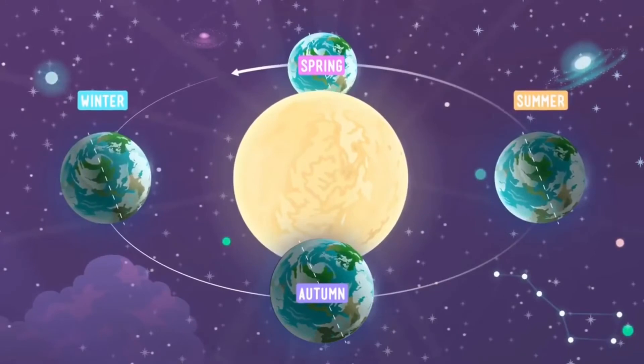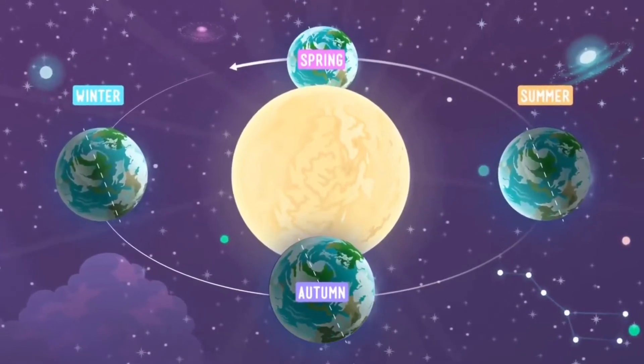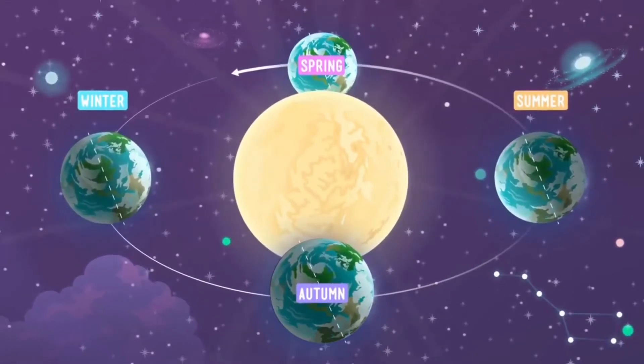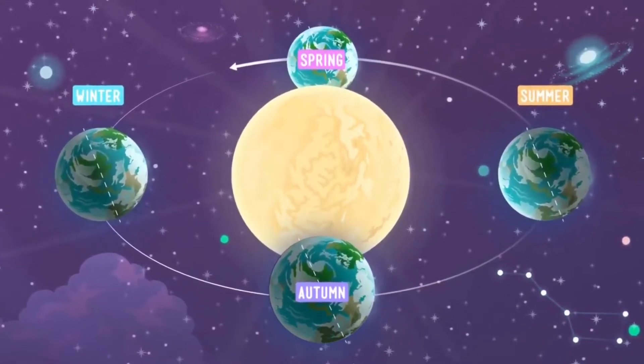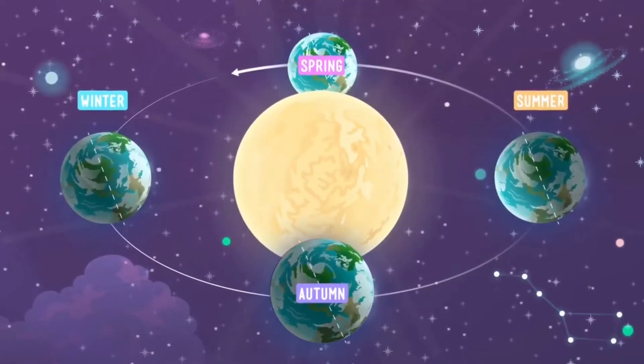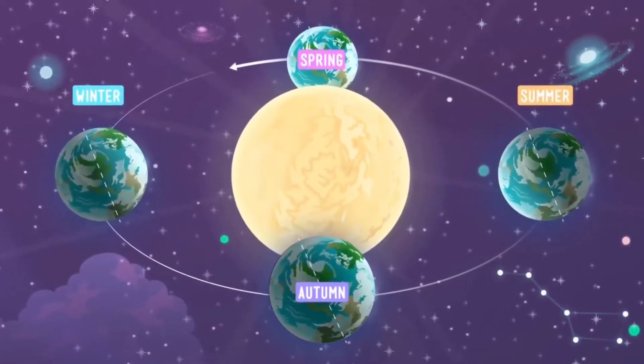Again, the four different seasons on the Earth are the summer solstice, winter solstice, spring equinox, and autumnal equinox.